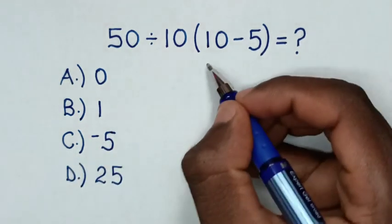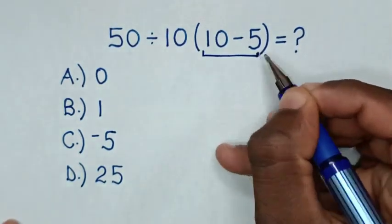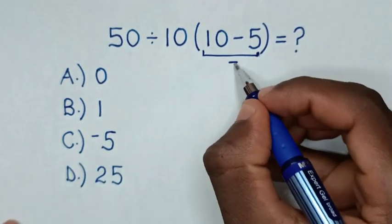So, first we'll start to deal with this operation inside the bracket, which is 10 minus 5 is 5.